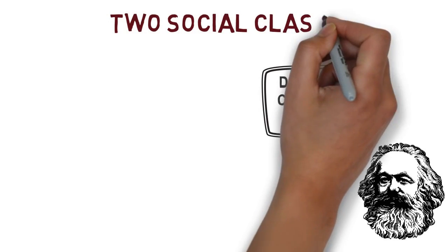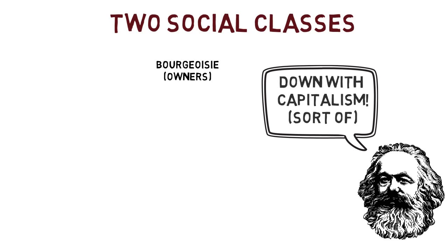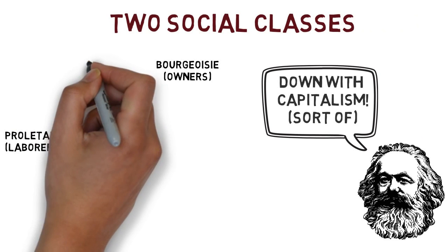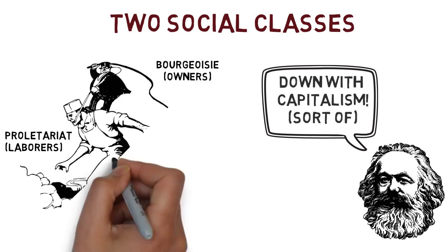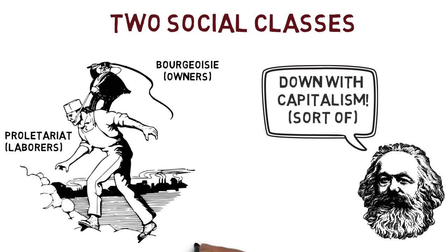Marx identified two social classes in his time, the bourgeoisie and the proletariat. The bourgeoisie owned the product, the means of production, distribution, and the profit.